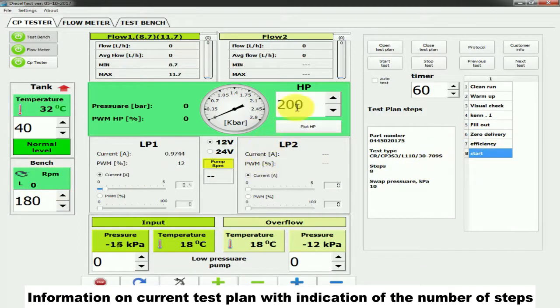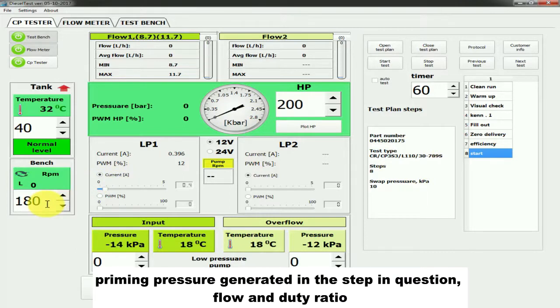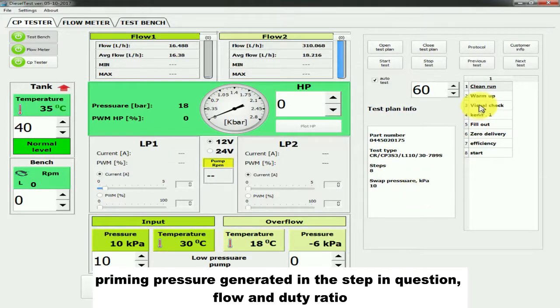Information on the current test plan with indication of the number of steps, priming pressure generated in the step in question, flow and duty ratio, and pressure value in the rail are displayed.